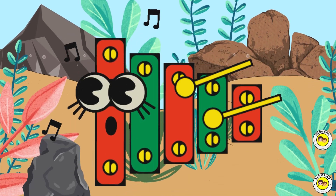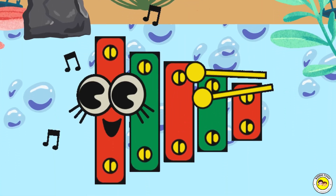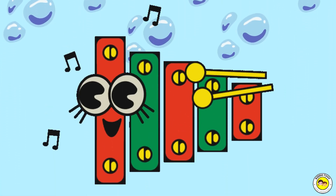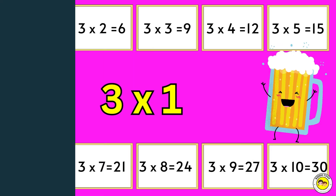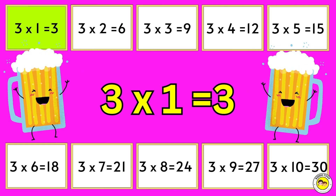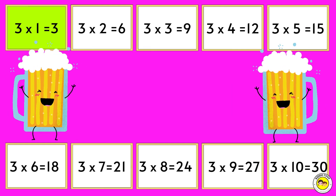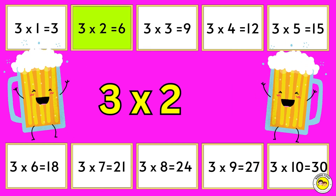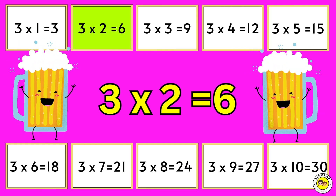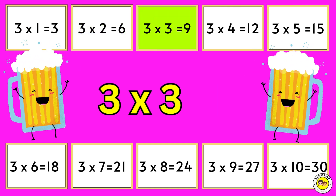Let's sing once again! Three times one equals three. Three times two equals six. Three times three equals nine.